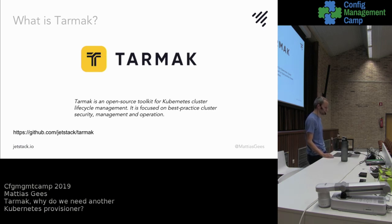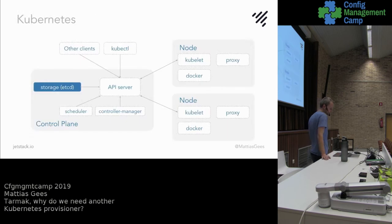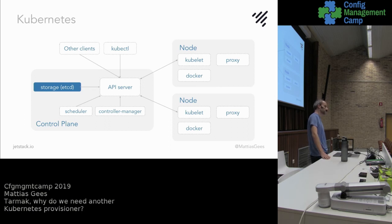So what is Tarmac? Tarmac is a Kubernetes provisioner to set up a best practice Kubernetes cluster, to update and upgrade the cluster with security in mind, and ease of operation and interaction with Kubernetes. For people who are not familiar, this is a normal architecture diagram of Kubernetes where you have your control plane, which is your central server where your API server runs — the central point where every other service connects to.